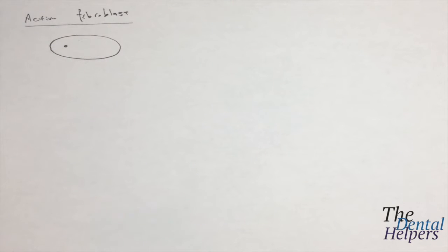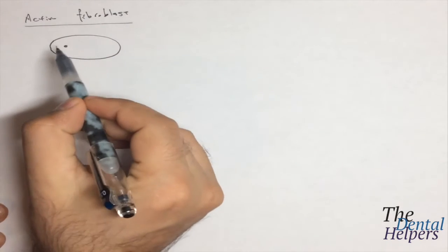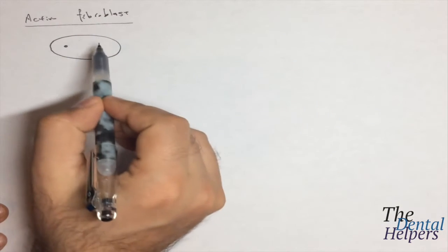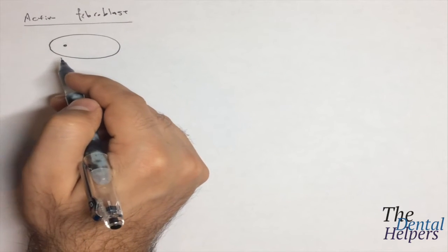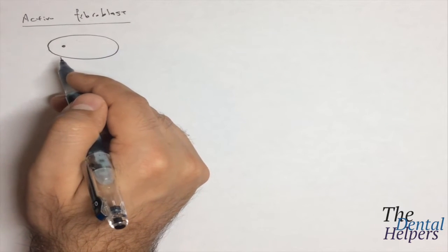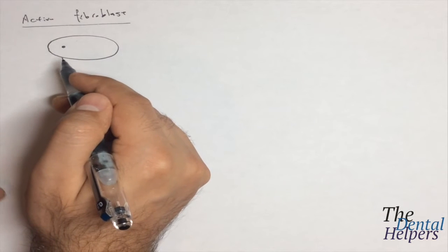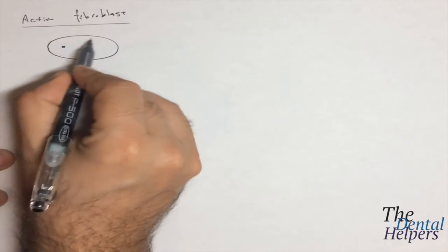We're now going to look at the different types of connective tissue cells. The active fibroblast is the first one and it's kind of an oval-shaped cell with a nucleus in the center. In terms of how it looks, if you're looking at a microscope it's going to kind of look like this.